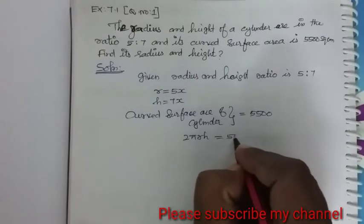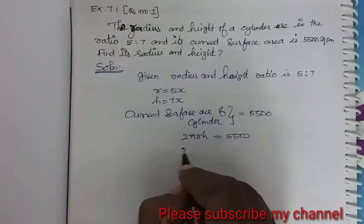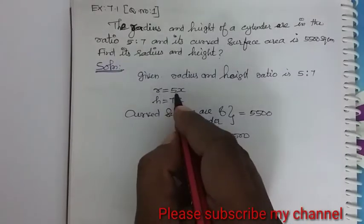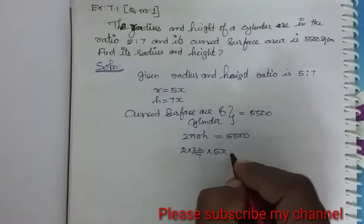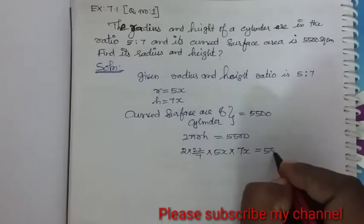The curved surface area of the cylinder is 2πrh. So 2πrh is equal to 5,500. This becomes 2 into 22 by 7 into radius 5x and height 7x, which is equal to 5,500.